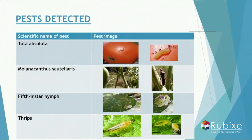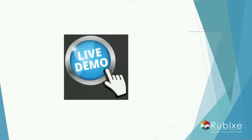This slide shows the pests that are currently detected by our model. Some of them are Tuta Absoluta, 5th instar larvae, and Thrips pest.